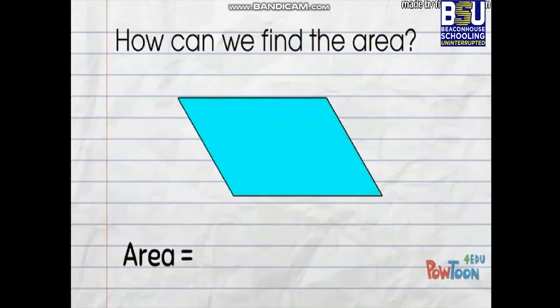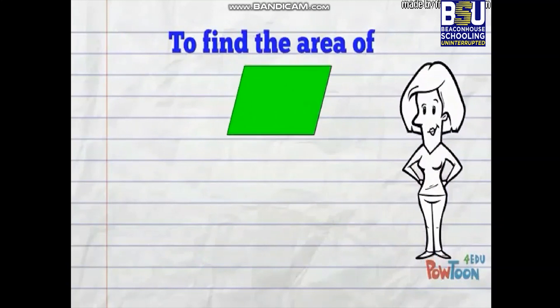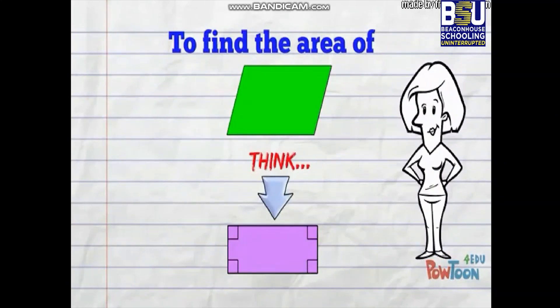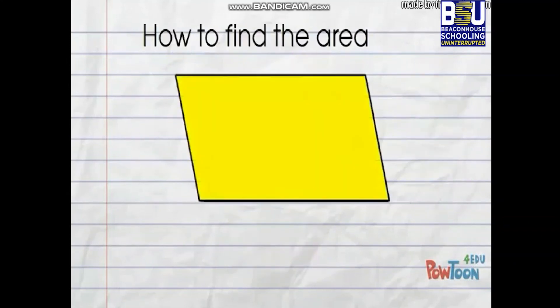You know how to find the area of a rectangle: length times width. But for a parallelogram we say the area is base times height. When we find the area of a parallelogram, we think of it like a rectangle. A rectangle has right-angled corners, so we form a right angle. We find the base, and then run a perpendicular line off the base to get the height.